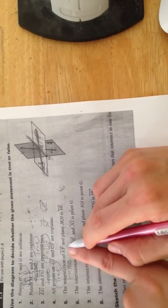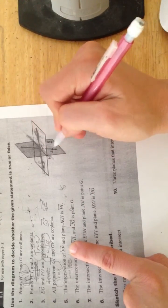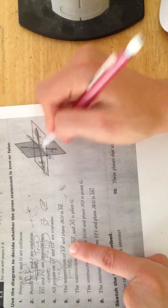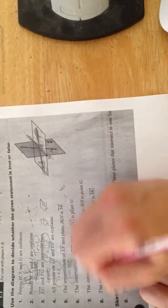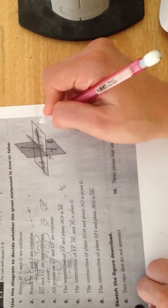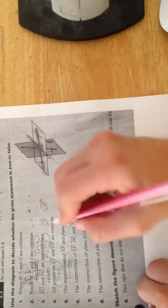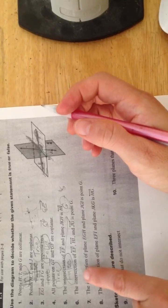Here they have the intersection of EF and the plane JKH, this plane here, is the line HI, and you're right, that is false, because where the plane and this line intersect, the only point that they have in common is actually point G, so they intersect at point G if you had to fix that.